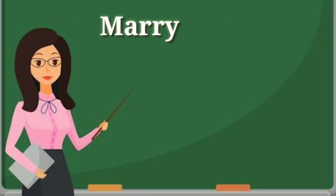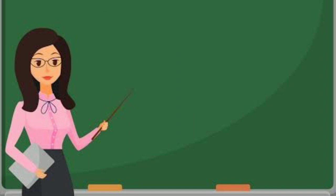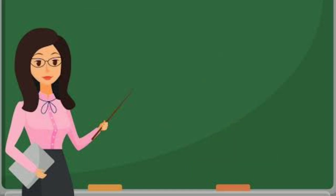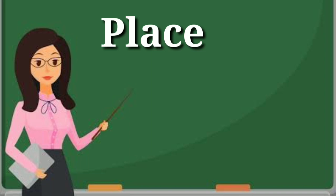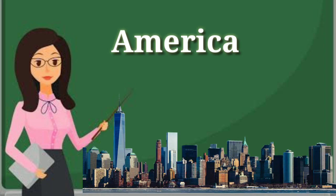Mary — who is Mary? Mary is a girl. The name of this girl, which means a person, is Mary. Next is Bruno — who is Bruno? Bruno is a dog. The name of this dog, which is an animal, is Bruno. Next is a place. We will take an example of a place: America. The name of this city, this city means place, is America. So America is a city.